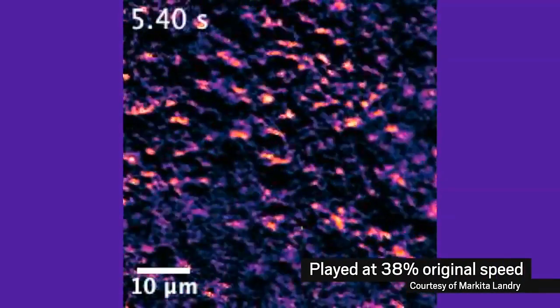Hot spots of dopamine show up as bursts of light when neurons in the tissue are artificially stimulated to release the chemical.